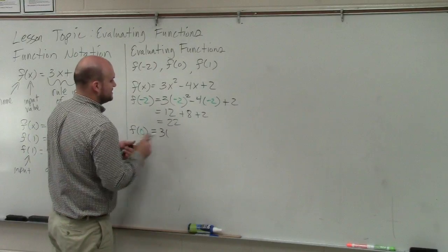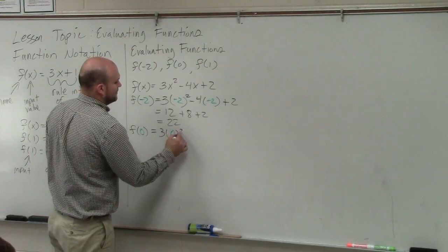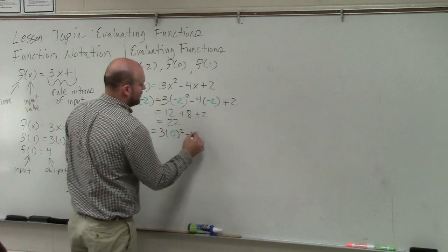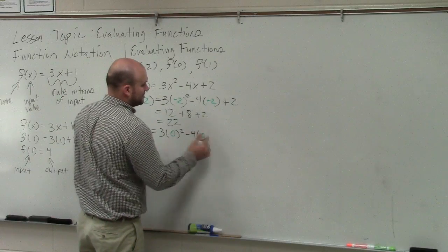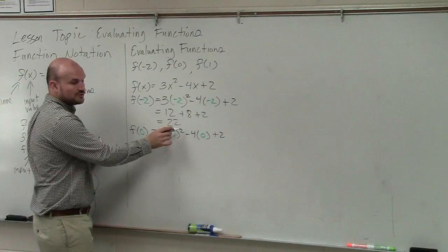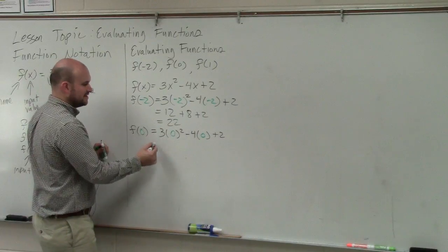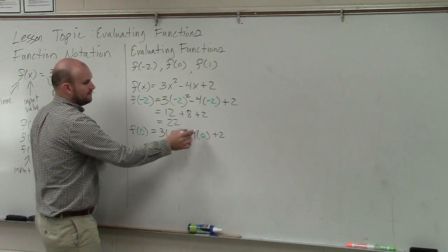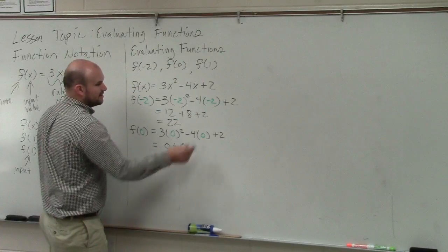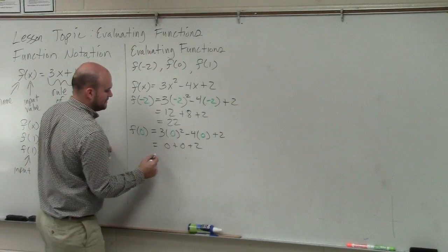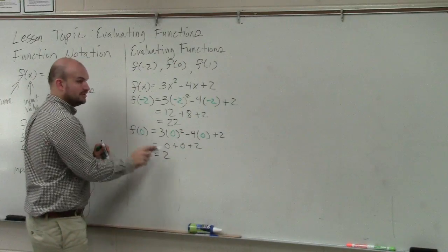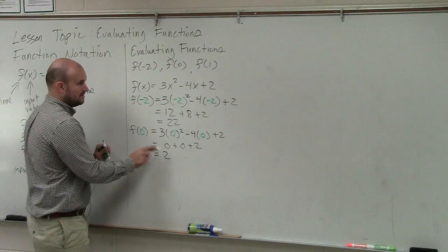3 times 0 squared minus 4 times 0 plus 2. Well, 0 squared is 0. 0 times 3 is 0. Negative 4 times 0 is going to be 0 and then plus 2. Input, output.